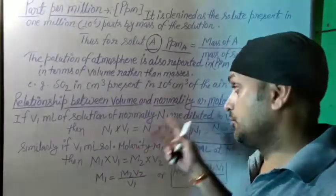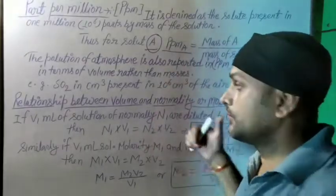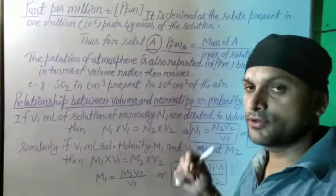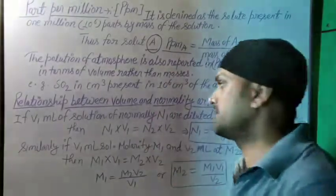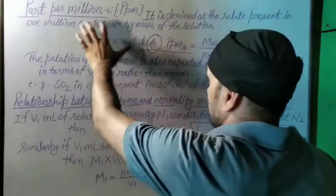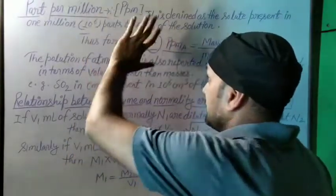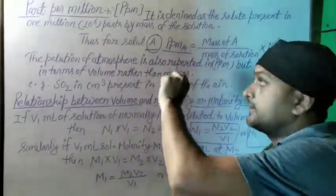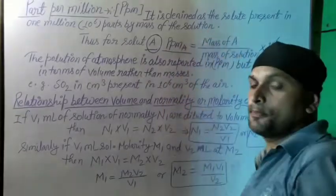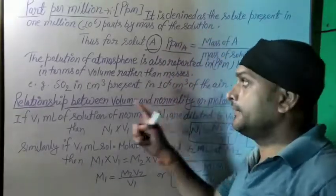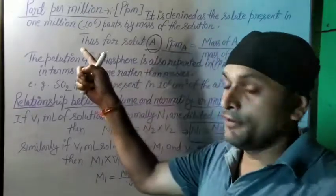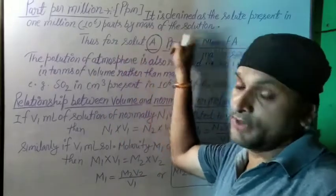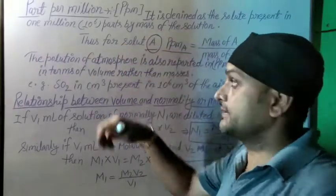These two topics are already covered, and after completing them we will move on to solid-in-liquid solutions. So let's see the definition of part per million. It is defined as the solute present in one million parts by mass of the solution.